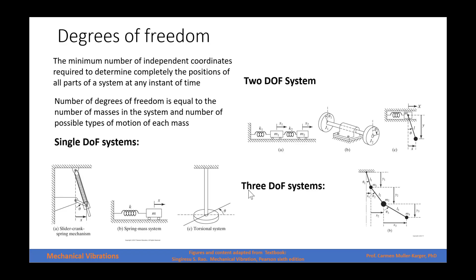Finally, we have a system of three degrees of freedom with three pendulums. We could choose to describe the motion with theta1, theta2, and theta3, or x1, x2, and x3, or y1, y2, and y3, or a combination of any of these variables. But at most, we can only choose three variables to completely describe the position of all parts of the system.